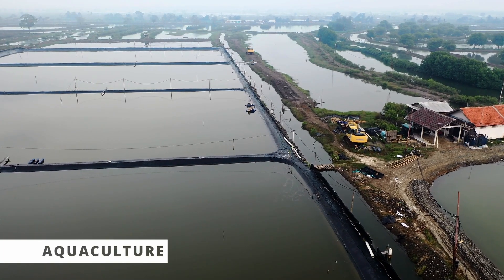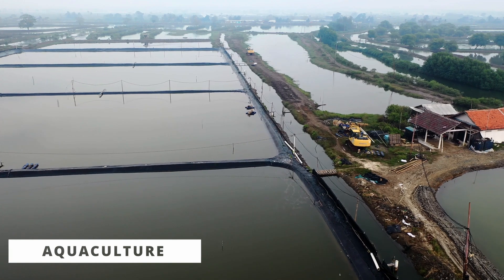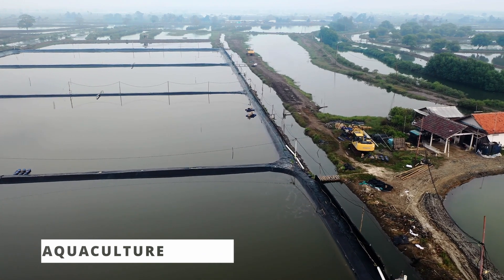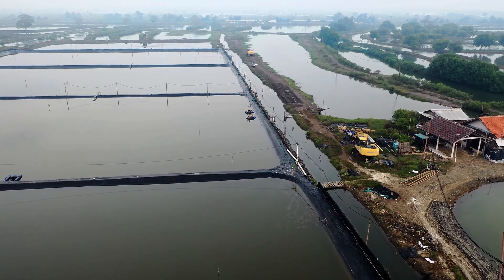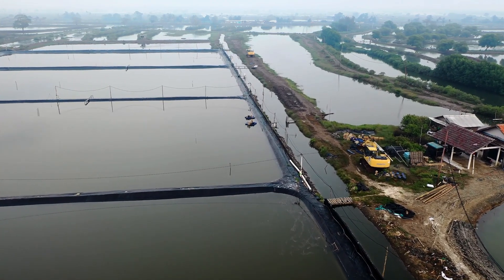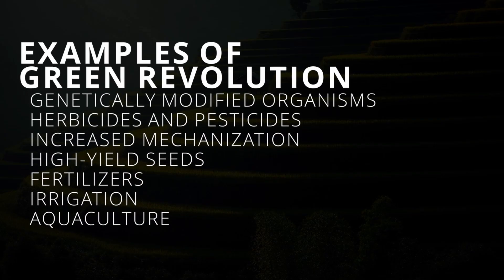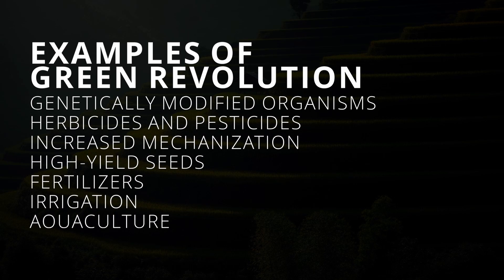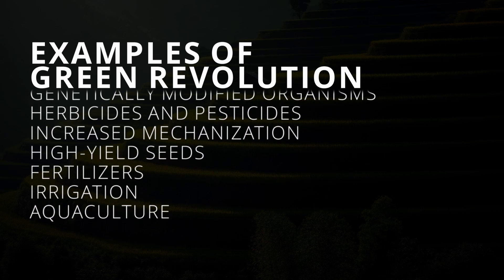The green revolution also included aquaculture — essentially controlled environments for farming fish. Here's a compiled list of all the examples of the green revolution. You can even pause here in case you want to jot them down.